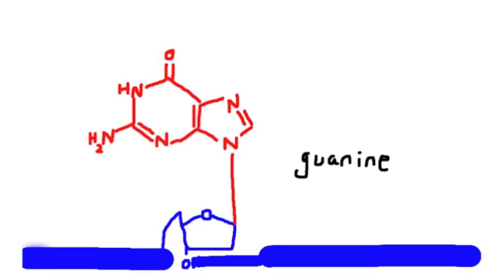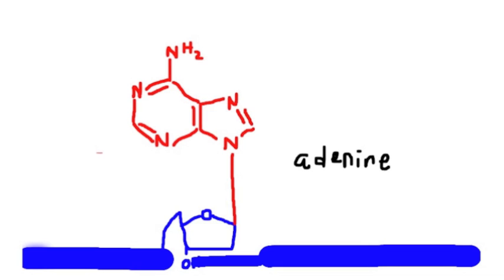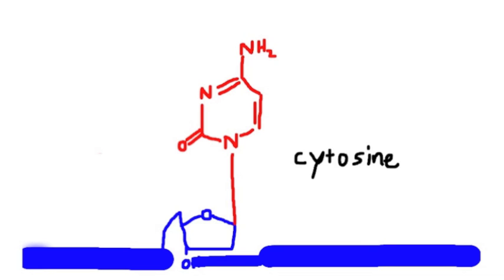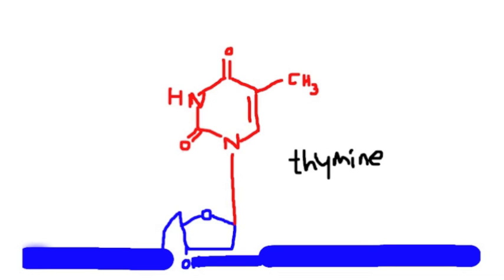The first one is guanine, which is a purine. The second is adenine, which is also a purine. The third is cytosine, which is a pyrimidine. And finally we have thymine, also a pyrimidine.